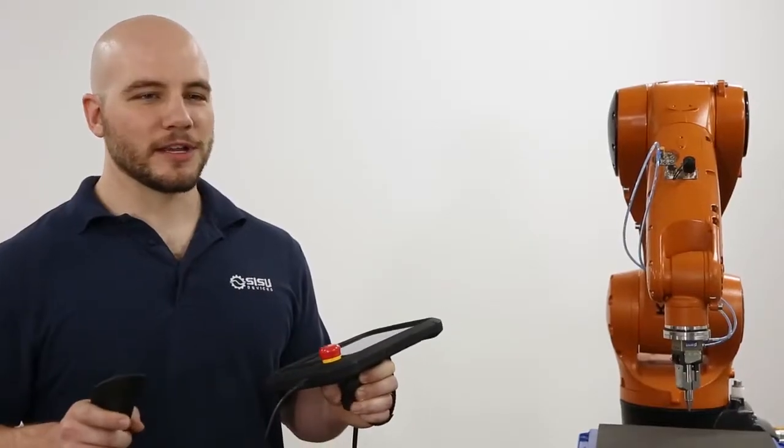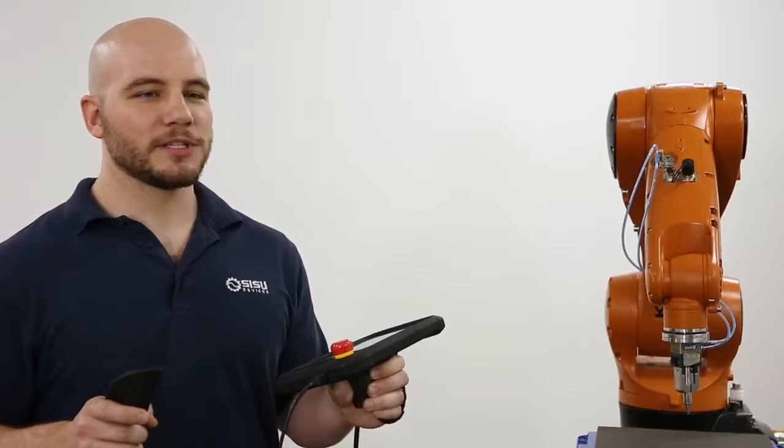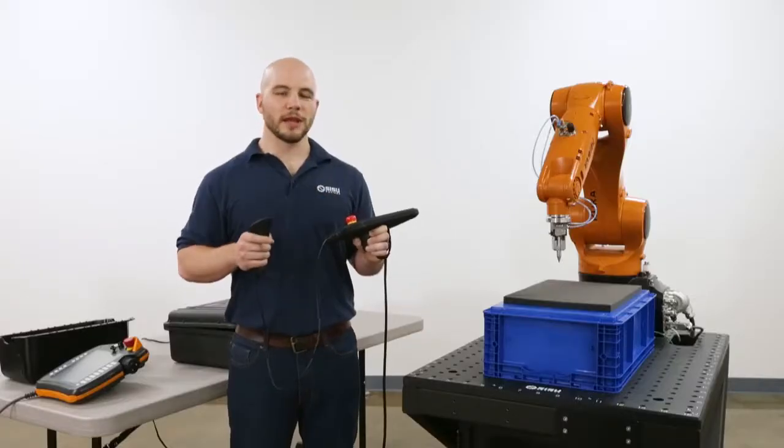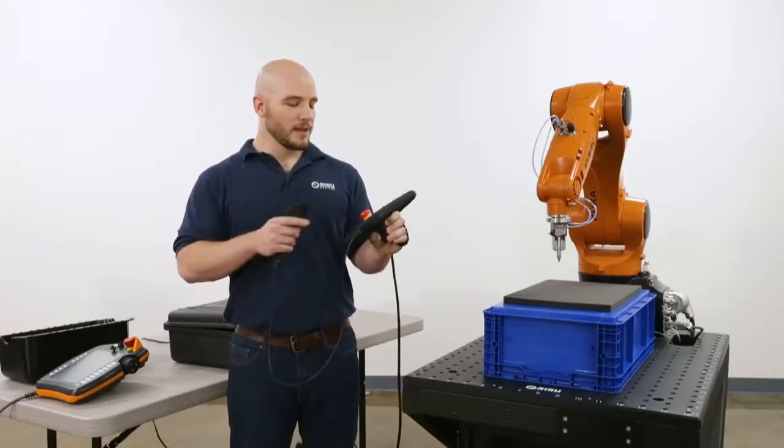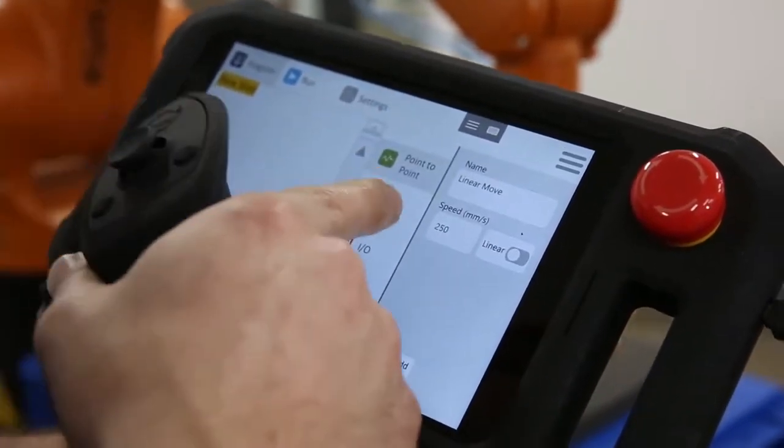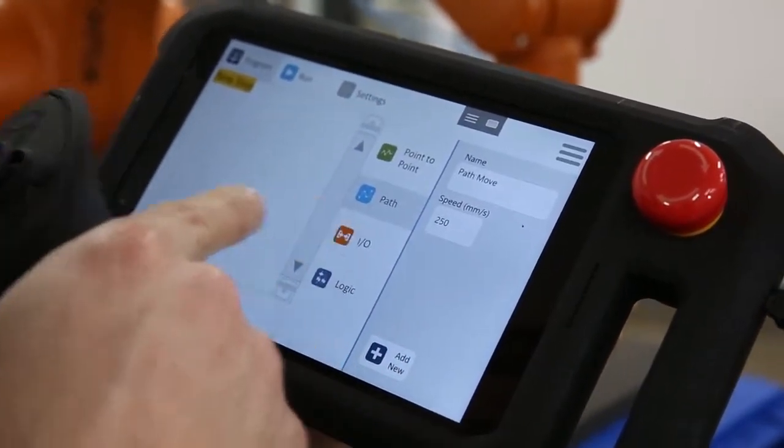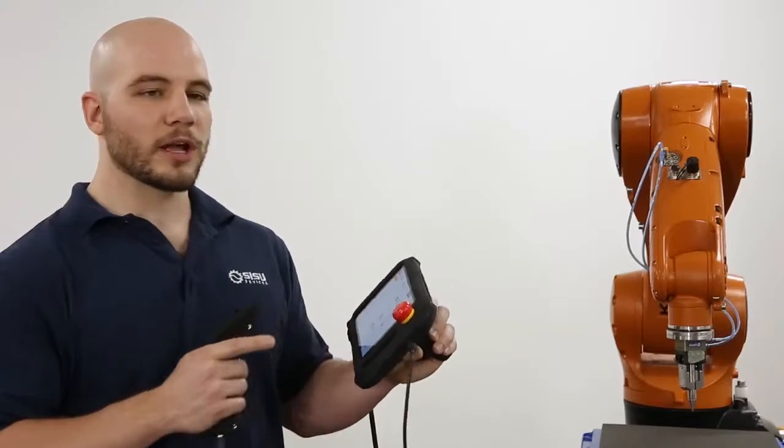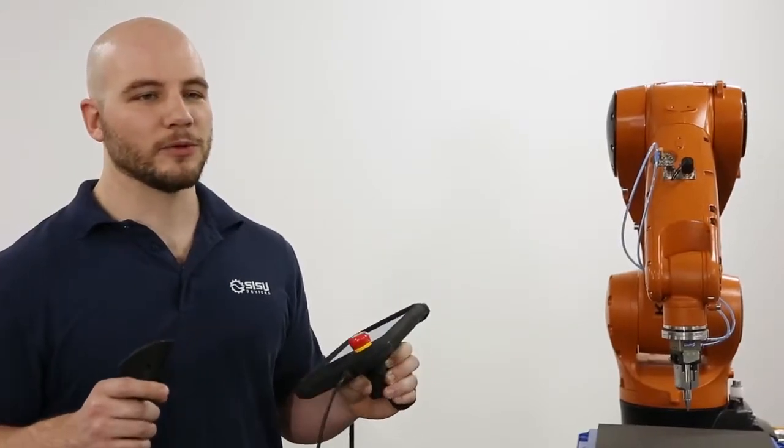Our entire focus is on ease of use. The UI has just three tabs: program, run, and settings. That's it. I can add point-to-point moves, path moves, toggle I/O, or add simple logic operations like if statements or loops. Let me show you how to write a program.